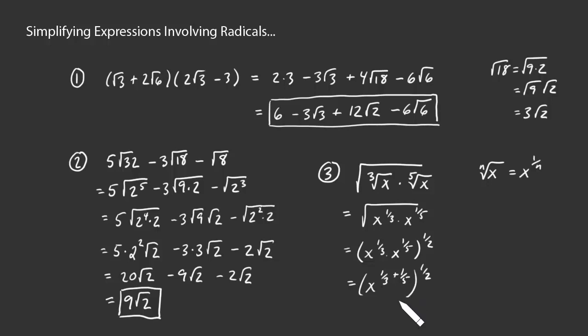So, this is x to the 1 third plus 1 fifth, all of that to the 1 half power. 1 third plus 1 fifth, of course, we'll have to get common denominators there. That's going to be x to the, let's see, if we put both these things over 15, that'd be 5 fifteenths plus 3 fifteenths. That's going to be 8 fifteenths. And then we're raising all of that to the half power. Of course, if you take a power and raise it to another power, we end up multiplying the exponents. So, a half of 8 fifteenths would be 4 fifteenths.